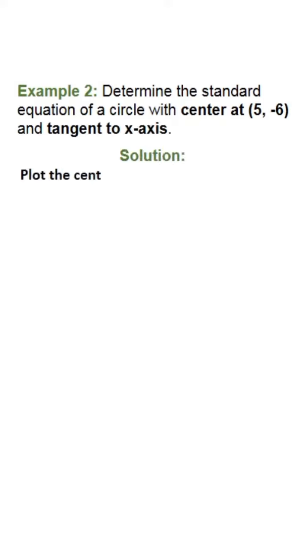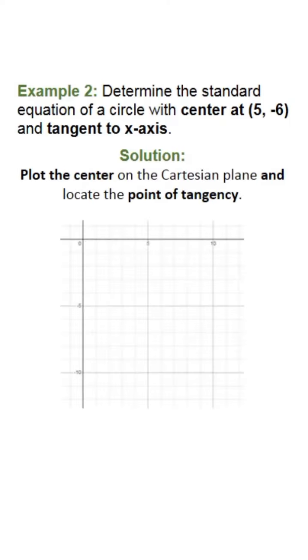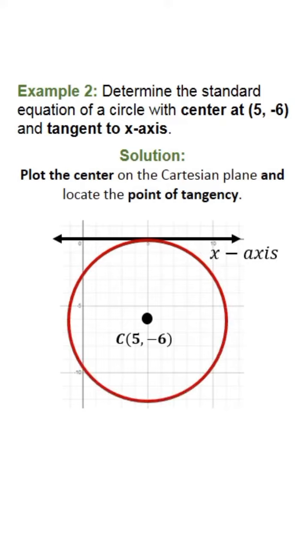Plot the center on the Cartesian plane and locate the point of tangency. This is the center. This is the x-axis. Visualize the arc of the circle tangent to x-axis. Therefore, this is the point of tangency.